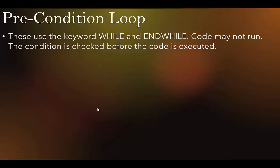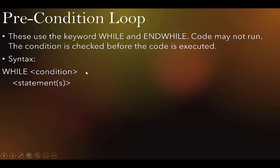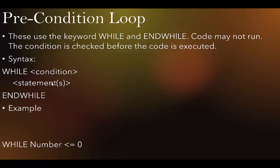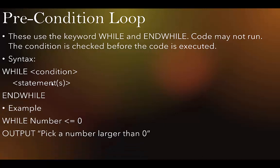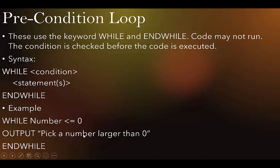The pre-conditional loop uses the keywords WHILE and ENDWHILE — ENDWHILE is one word. The condition is checked before the code executes, so the code may not run at all. Syntax: WHILE condition DO — statement — ENDWHILE. Example: WHILE number <= 0 — OUTPUT 'Pick a number larger than zero' — INPUT number — ENDWHILE. You need to include the INPUT inside the loop, otherwise it outputs forever until the program crashes.